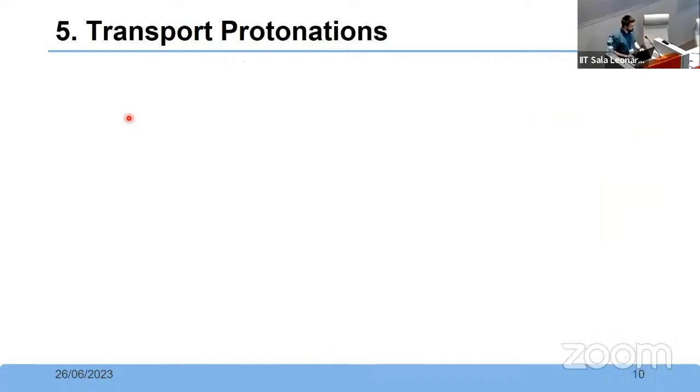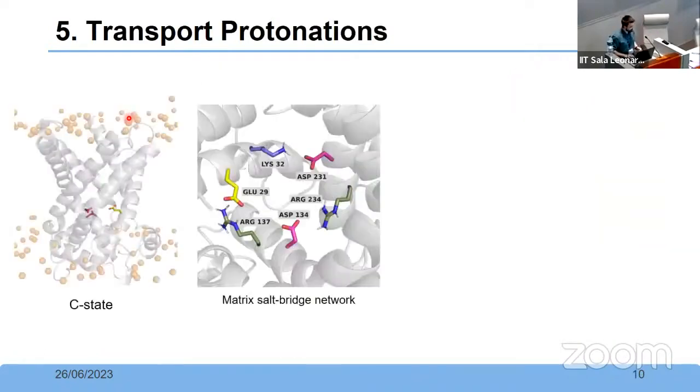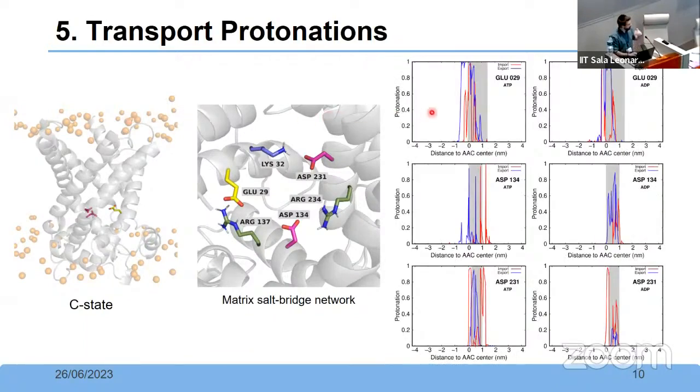Finally, since we were also using constant pH-MD, and we did this for the substrates, you can also see what happens to this matrix salt bridge network. Because for the transformation from C to the M state to occur, we would expect this network to be broken. And in fact, what we see is that when our substrates approach the location of this residue, which is marked here on this black box, we can see that they start to protonate, and if they protonate, they break the bonds, and so the conformational change from C to M state is enhanced. It is done more fast. And this is another feature that we can see that is allowing the import to be done, even against such higher stakes.